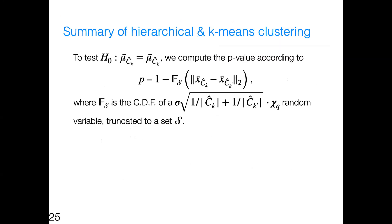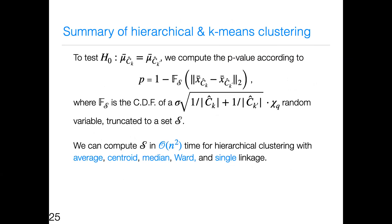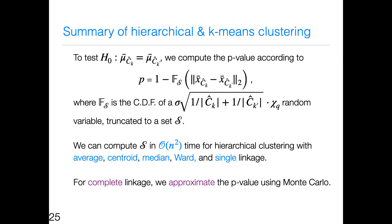To summarize: we wanted to test the null hypothesis that the mean in the k-th estimated cluster equals the mean in the k-prime estimated cluster. To do that, we look at the CDF of a truncated chi distribution with q degrees of freedom truncated to set S. We characterized set S in O(n²) time for hierarchical clustering — except complete linkage, which required Monte Carlo — and in O(NTK) time for k-means clustering. Computing these p-values requires the same computational order as performing the clustering itself.